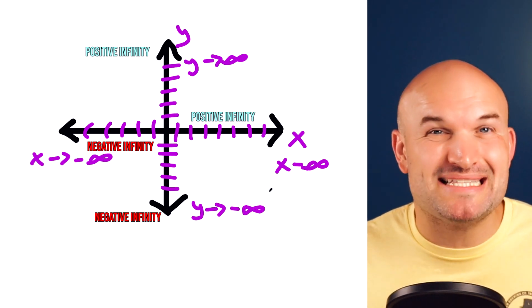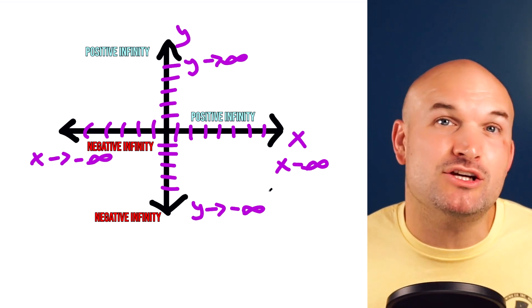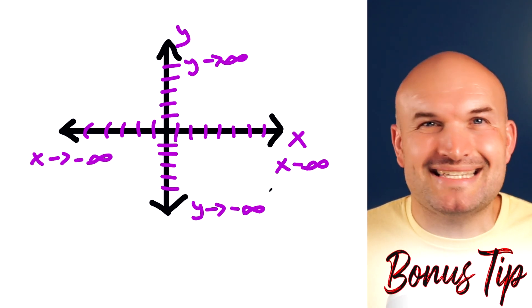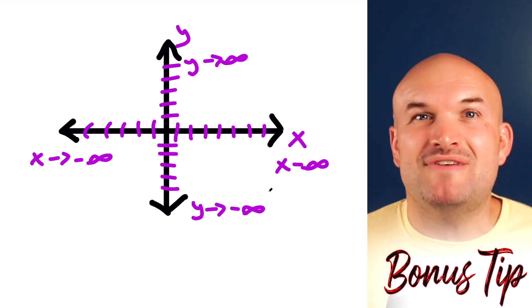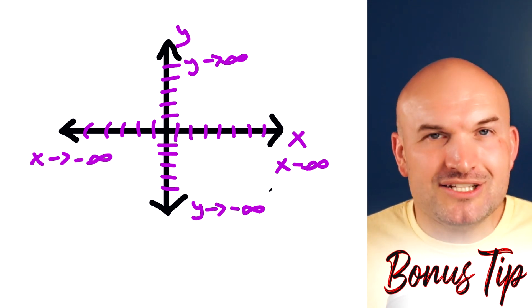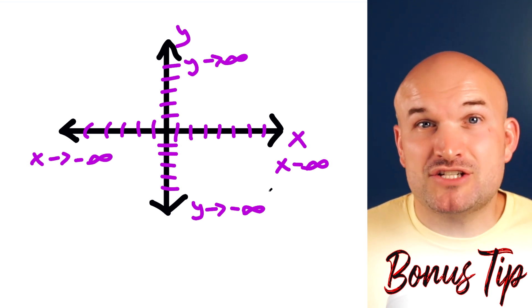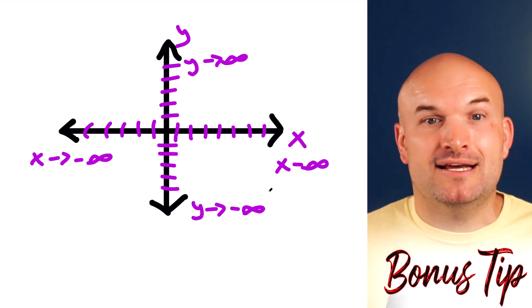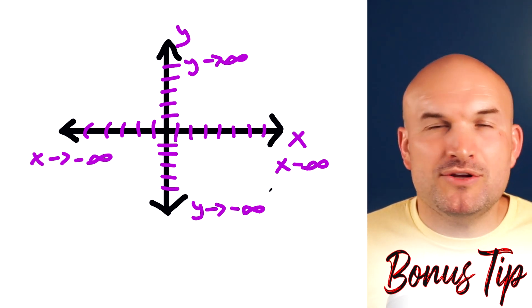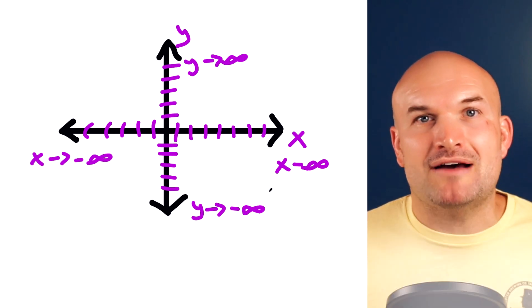Now, when we're evaluating limits at infinity, what we're looking for is the value that the graph is approaching as we expand. Bonus tip: when we're looking at evaluating limits at infinity as well as negative infinity, we're really just looking for the end behavior of the graph — where the graph is going as we keep expanding, as we zoom out.